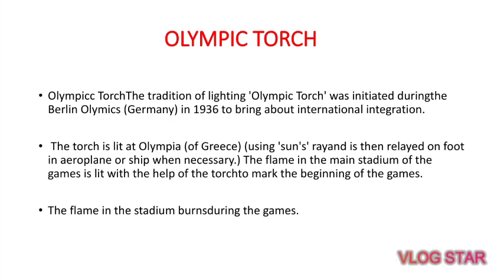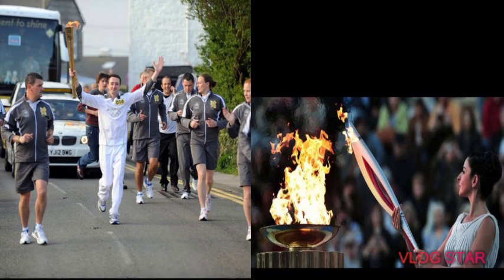Towards the tradition of lighting, the Olympic torch was introduced during the Berlin Olympics in Germany in 1936 to bring about international integration. The games begin with the Olympic torch.